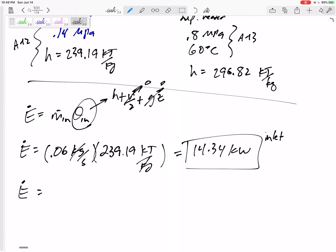The rate going out of the outlet: 0.06 kilograms per second times 296.82 kilojoules per kilogram. 17.81 kilowatts at the outlet.